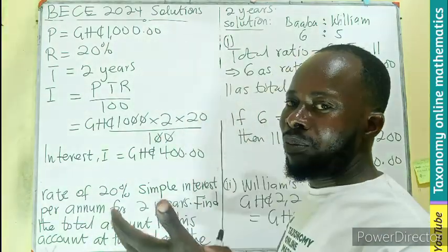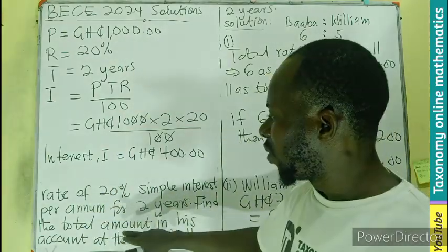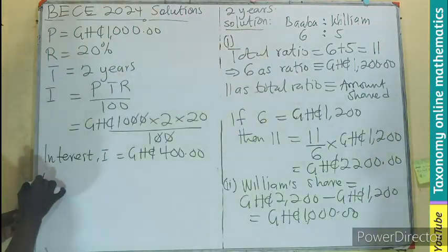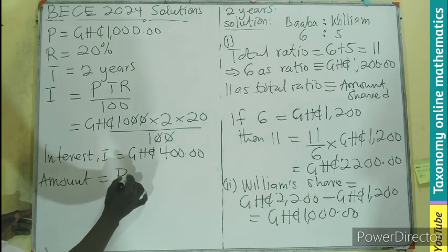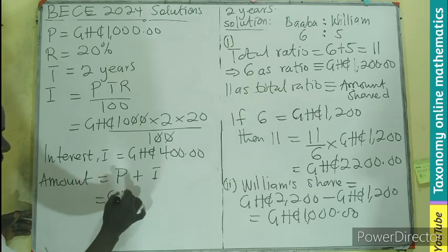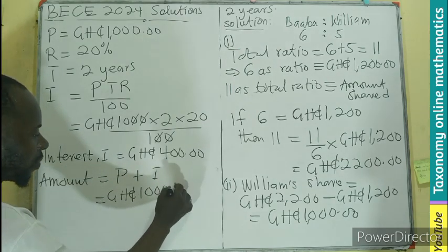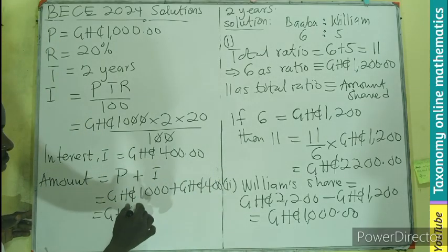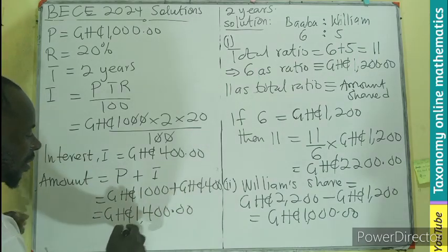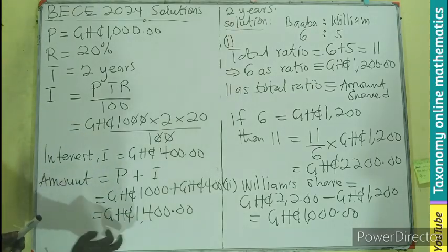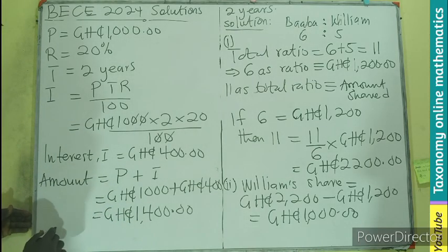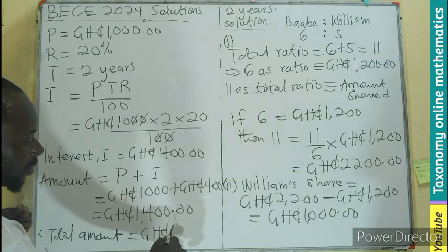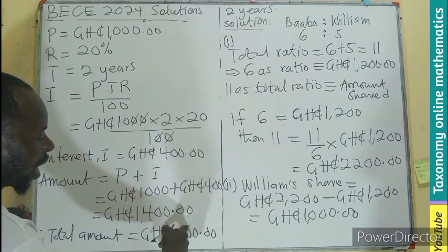That interest will be reverted back into the account, added to the principal, to give the total amount in the account. So: Amount = Principal + Interest. The principal was 1,000 and they will have 400 in interest. So at the end of everything, there will be 1,400 in the account. Therefore, the total amount equals 1,400.